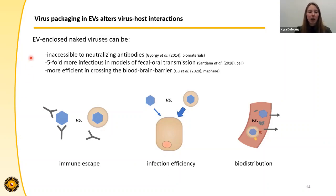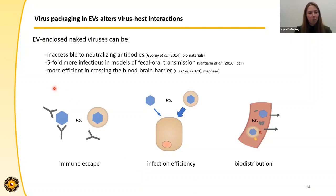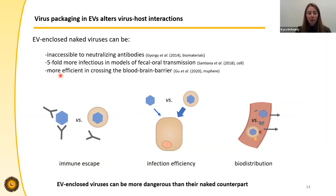The fact that these particles are formed at all has implications for disease, because a virus packaged in an EV can alter virus-host interactions. When a virus particle is packaged in an EV, it is shielded from the outside environment, and as a result, many EV-enveloped viruses are inaccessible to neutralizing antibodies. When a virus is packaged in an EV, the EV membrane takes over binding and uptake into the host cell. Combined with the fact that vesicles can package multiple virus particles and host molecules as one package, this can affect infection efficiency. In one model of fecal-oral transmission, the EV-enclosed form of a virus was five-fold more infectious than its naked counterpart. Vesicles can also affect the tissue to which virus particles are preferentially delivered — including increasing the ability of a virus to cross the blood-brain barrier.